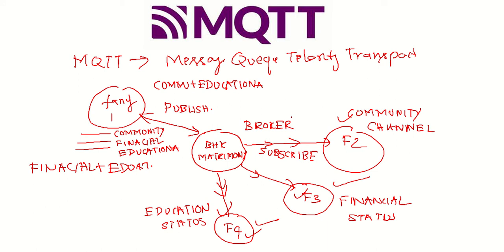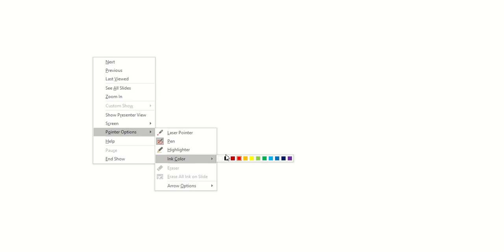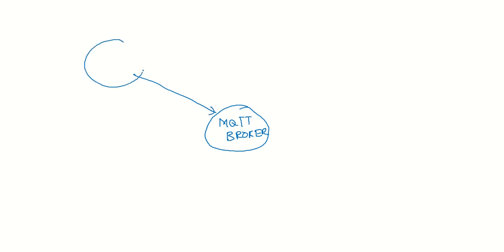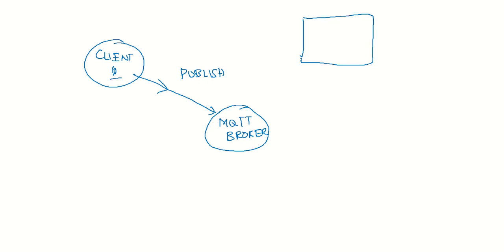This is the concept — this simple marriage broker analogy maps directly to the MQTT protocol. In MQTT, the equivalent of BHK Matrimony is the MQTT broker. We have an MQTT broker. You publish data to the MQTT broker, just like publishing on a website or a social media page.